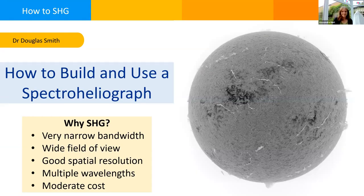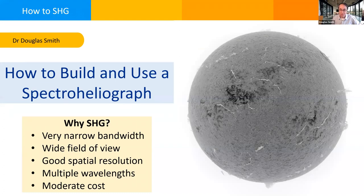Welcome to Solar Chat, and I'll hand you over to Douglas Smith. So what I wanted to do was go over why you would want to use this technique. It is a little bit more difficult than your typical solar observation technique, but what it does is it can give you a very narrow bandwidth, something probably between 0.2 angstroms and maybe even a bit less, versus a typical maybe half to one angstrom you'd get with other techniques.